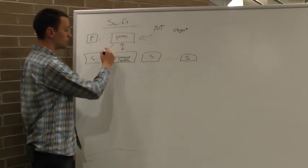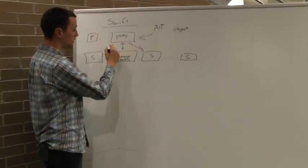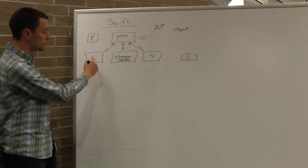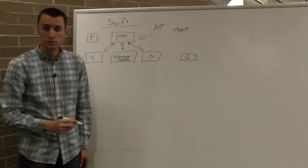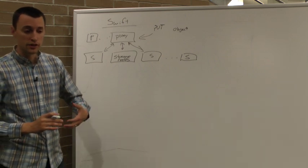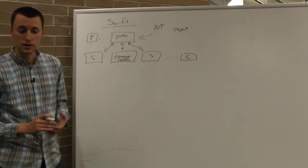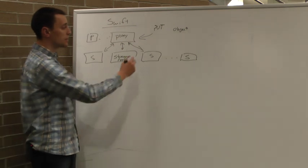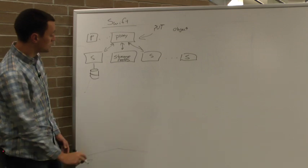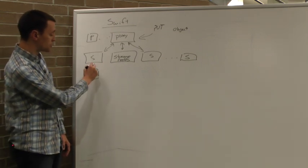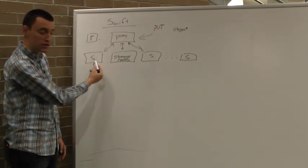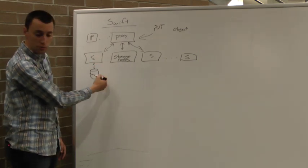The proxy server then communicates with the appropriate storage nodes and ensures that the object is written down, is sent to those nodes. The storage node is responsible for actually durably storing it on disk and then sending a response back to the proxy server. So in this way, when you've got all your drives connected to the storage nodes, the object is sent to the proxy server, then goes to the storage node, which then writes it durably back down to the disk.